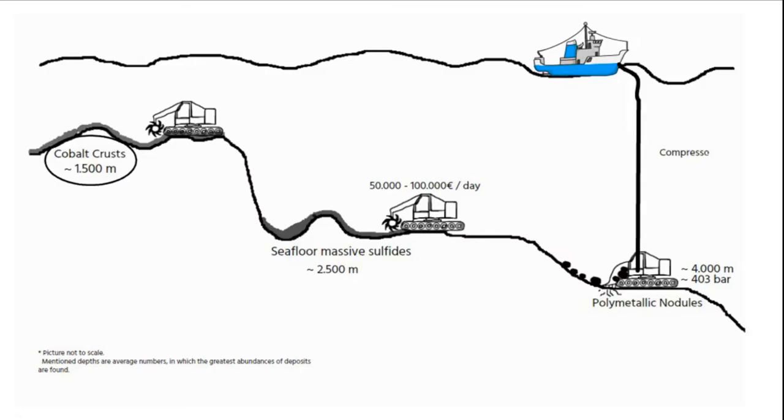In the airlift system, compressed air is injected into the riser which, by changing the water's density, pushes the mineralized slurry up to the surface. As compressed air is forced down the tube, the mineralized slurry can make its way up to the surface. This technique has already been tested for polymetallic nodules at water depths of around 4,500 meters.